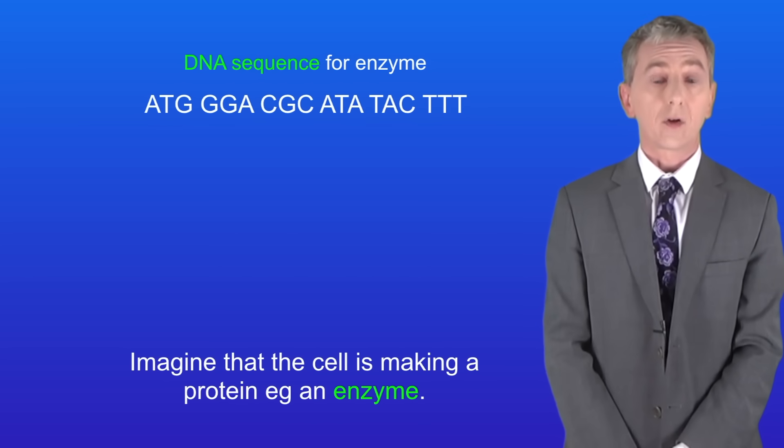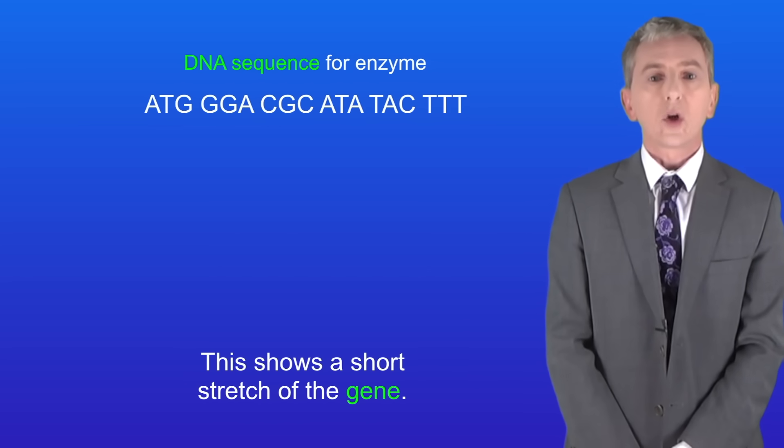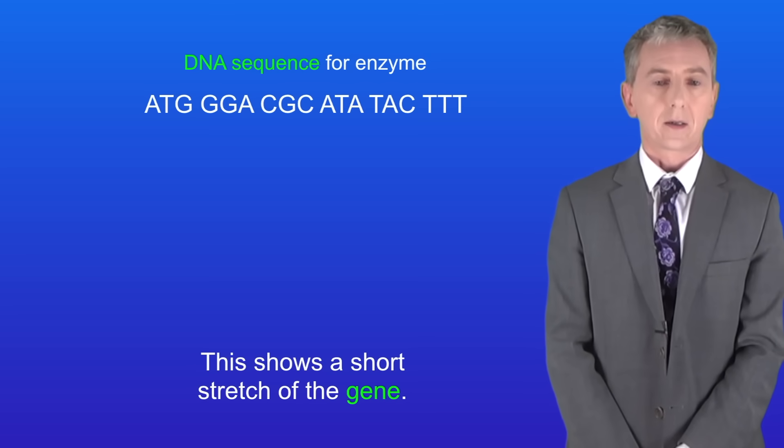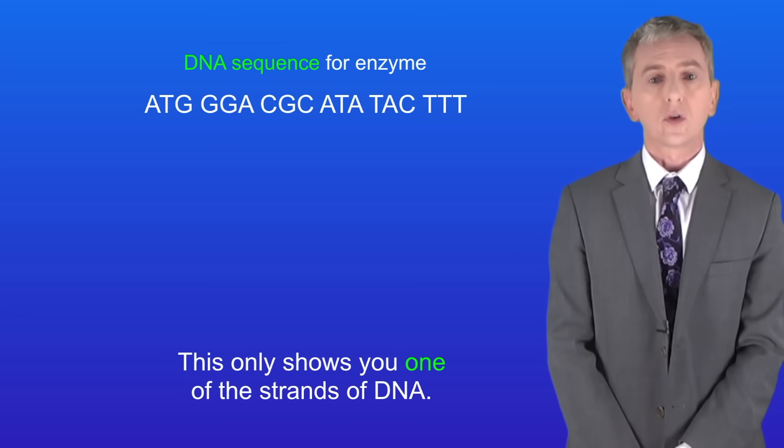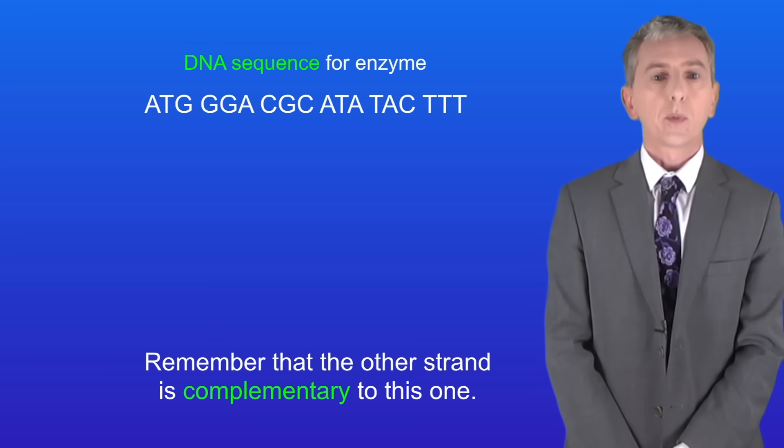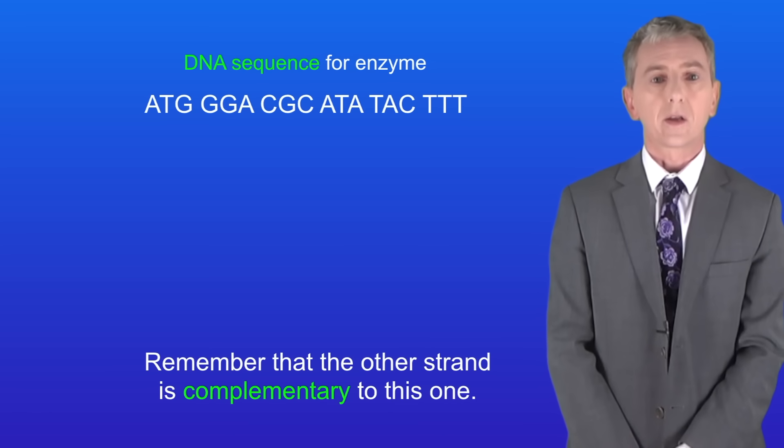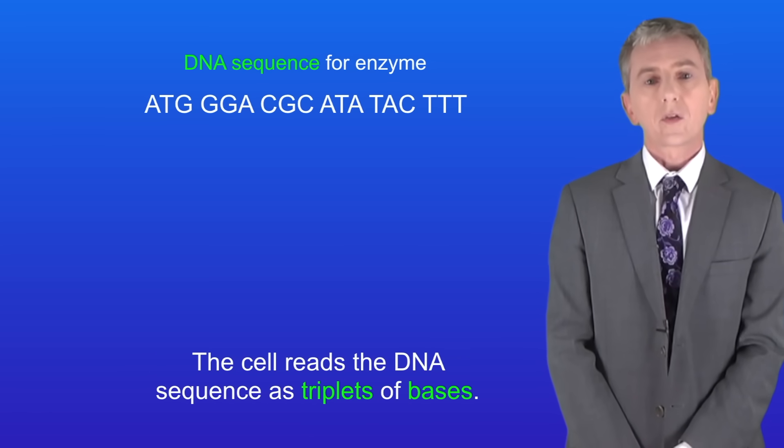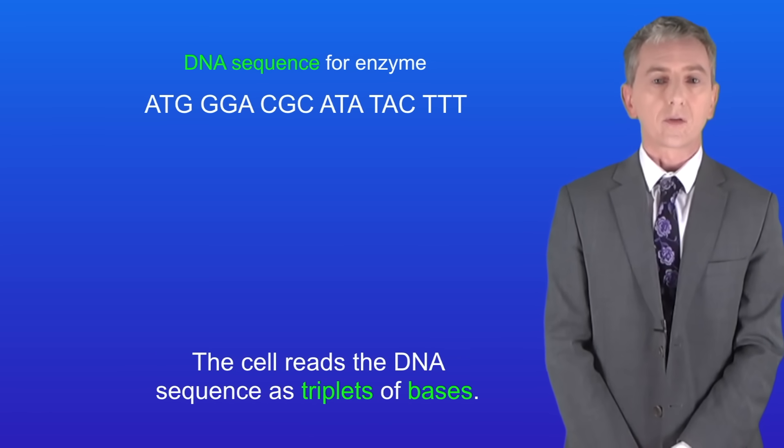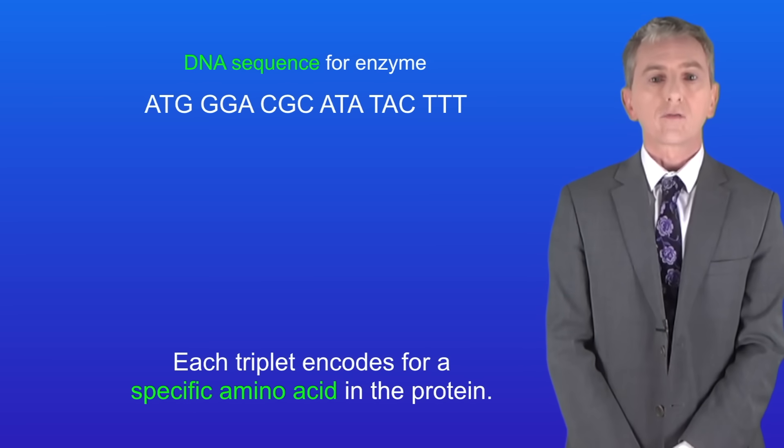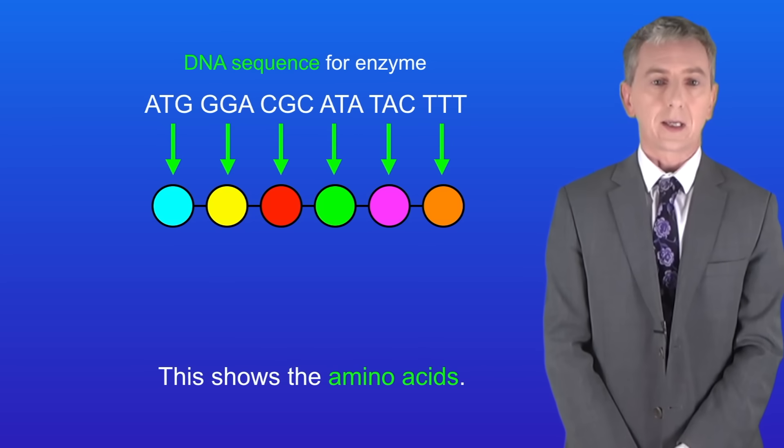Imagine that the cell is making a protein, for example an enzyme. I'm showing you a short stretch of the gene here. I should point out that this only shows you one of the strands of DNA, but remember that the other strand is complementary to this one. The cell reads the DNA sequence as triplets of bases, and each triplet encodes for a specific amino acid in the protein. I'm showing you the amino acids here.